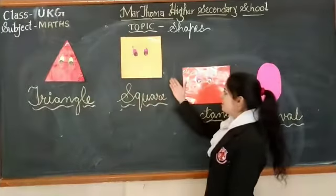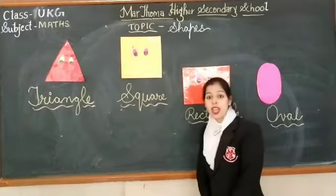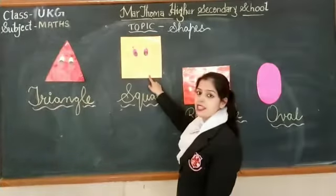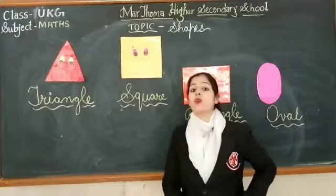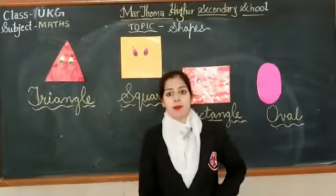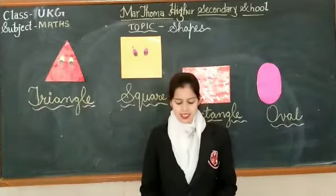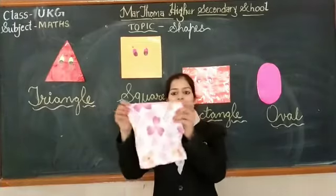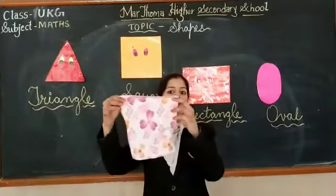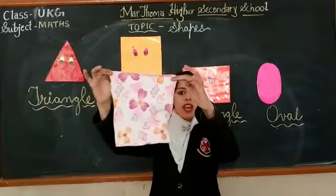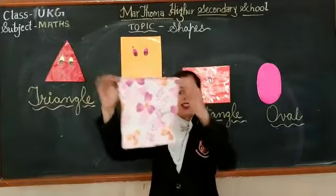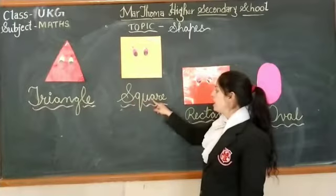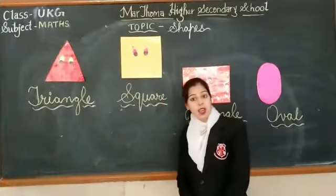Now next shape — square. Which shape is this? Square. What is the shape of the napkin? Look here. What is the shape of the napkin? Square. S-Q-U-A-R-E. Square.